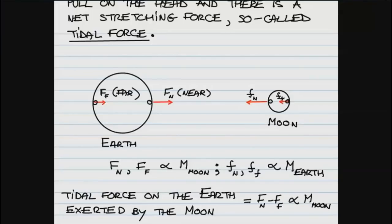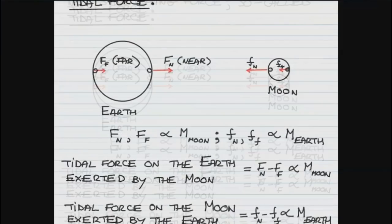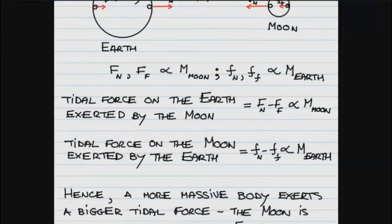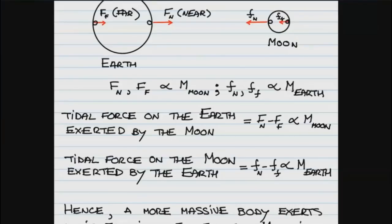These two forces are the gravitational forces on elements of the Moon — one closer to the Earth, one farther away — and the one closer will experience a bigger pull. Both forces acting on Earth are proportional to the mass of the Moon, according to Newton's law of gravity, which tells us that the gravitational interaction between two bodies is proportional to the product of their masses and inversely proportional to the square of their distance. Since each force is proportional to the mass of the Moon, their difference — the tidal force — is also proportional to the mass of the Moon.